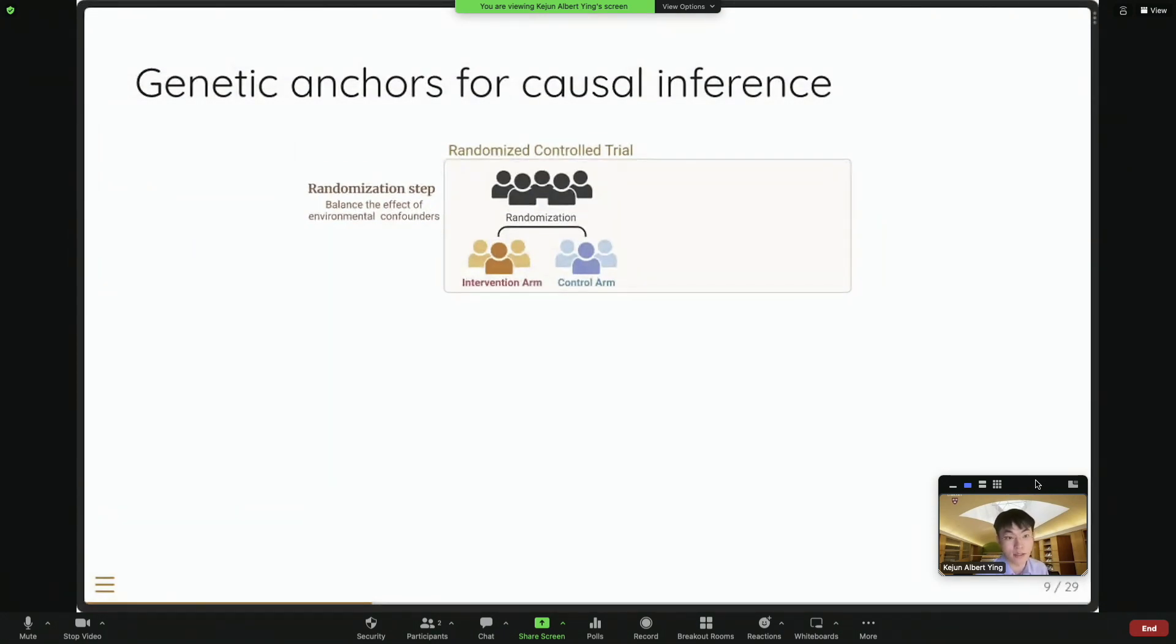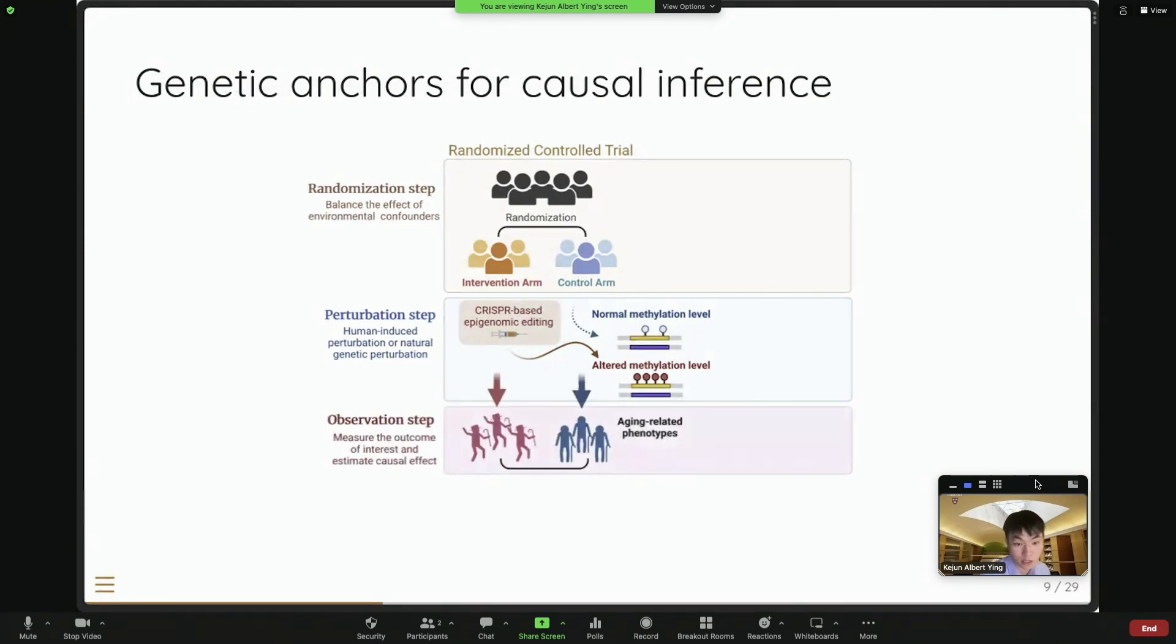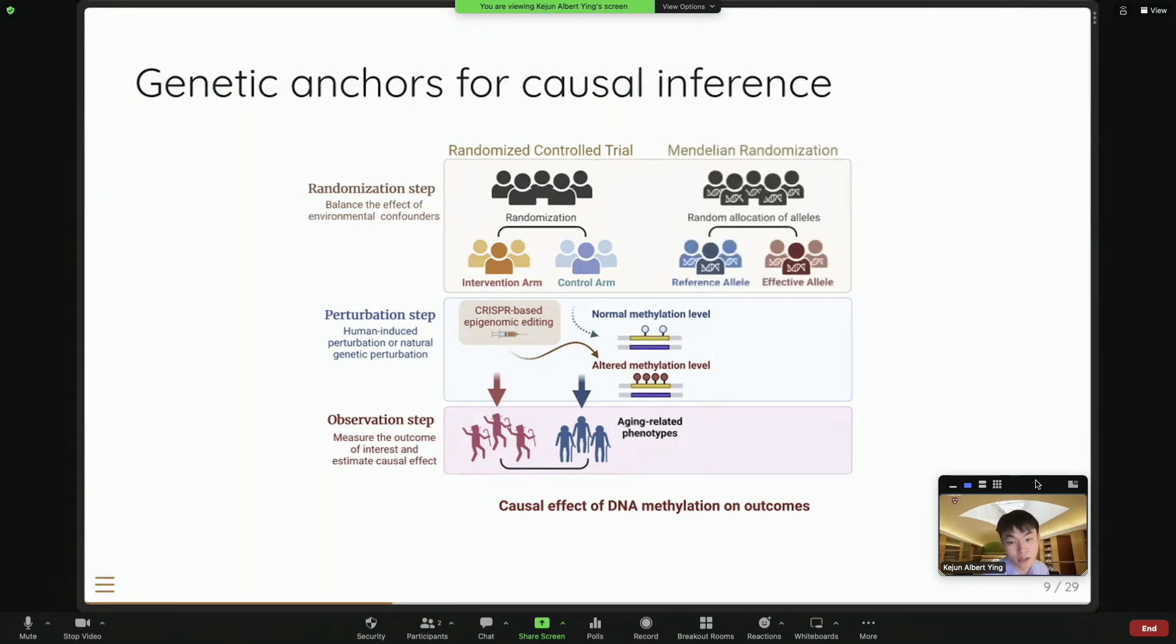So how do we assess the causality? So the traditional gold standard way is to do a trial. So in human, we do a randomized clinical trial. So we randomize our patient into intervention control arm, and we can give them some intervention to manipulate their methylation state of certain CpG sites. And then we measure the outcome, for example, lifespan or health span. And the difference between these two arms is our causal effect. But of course, it's not very realistic to do it here because we have millions of CpG sites across the genome. It's impossible to do a million clinical trials. So instead, we use a smart approach called Mendelian randomization.